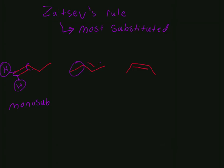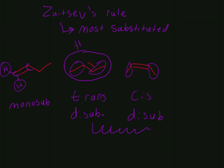This one has two substituents each going in opposite directions, so this is trans di-substituted. This one has both substituents going in the same direction, so this would be cis — also di-substituted. From Zaitsev's rule, trans is the more stable one, so this is the most stable product, number one. This is number two, more stable than mono, which only has one substituent. And finally, cis is number three for least stable.